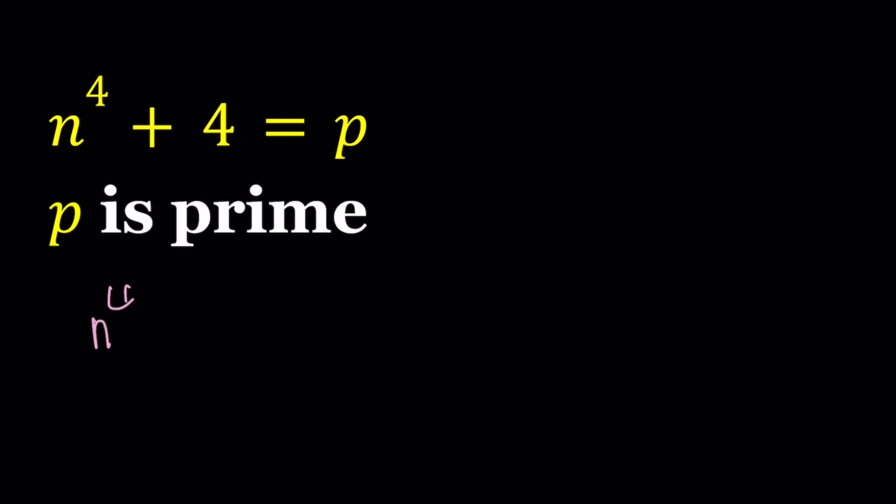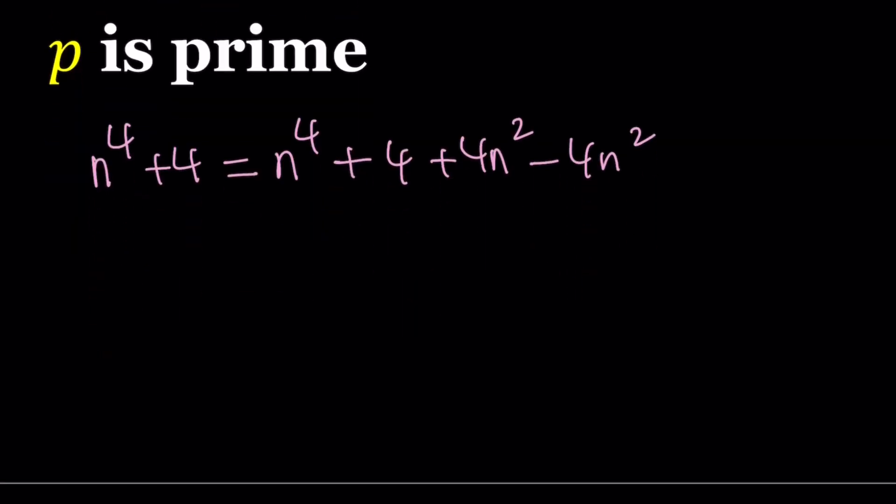We have n to the fourth power plus four, and we've done some other videos on this one. So we can basically add something to both sides, like 4n squared, and then subtract 4n squared. Now you might be questioning, like why did I do that? So here's the idea.